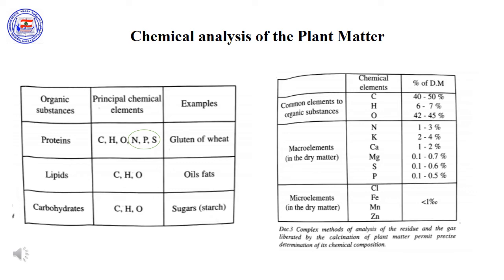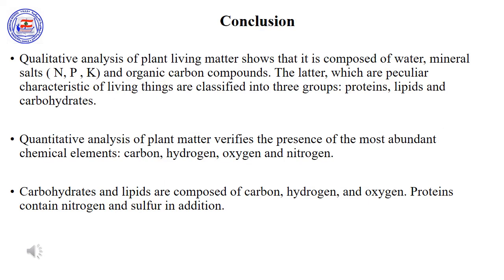Moreover, minerals can be divided into two major groups: macroelements and microelements. Macroelements are needed in large quantities, such as nitrogen, phosphorus, magnesium, etc. While microelements are needed in smaller quantities, such as iron, zinc, and chloride. Today's session is finished. Please copy this conclusion in your copybook and memorize it. Thank you and see you soon.